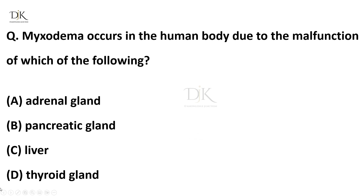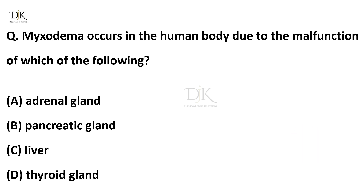Myxedema occurs in the human body due to the malfunction of which of the following? Right answer is thyroid gland.